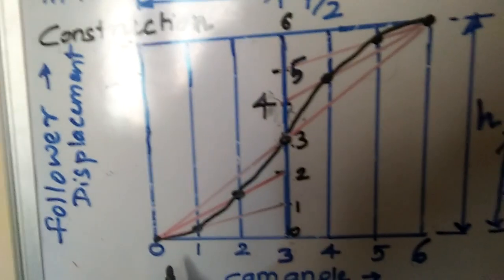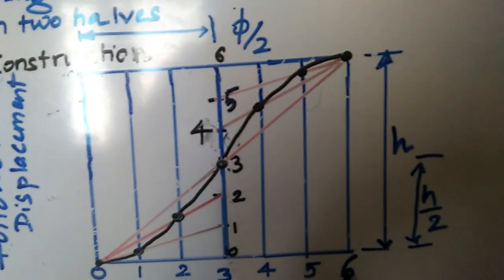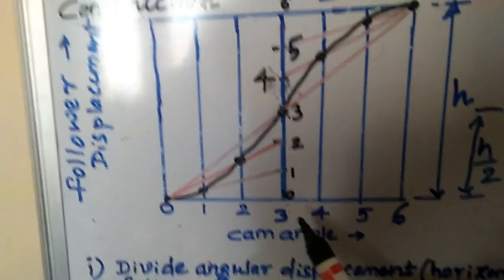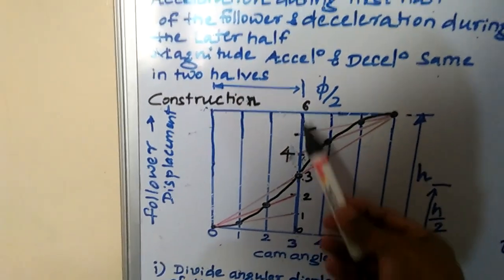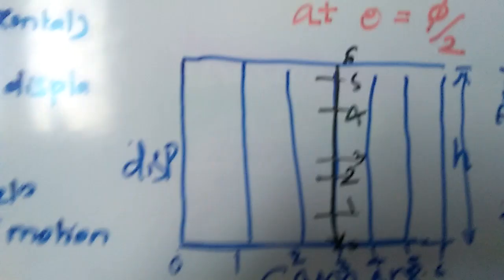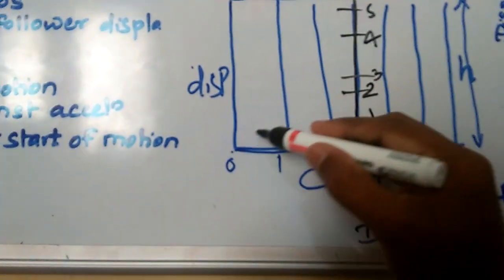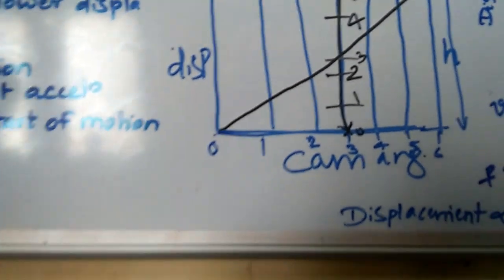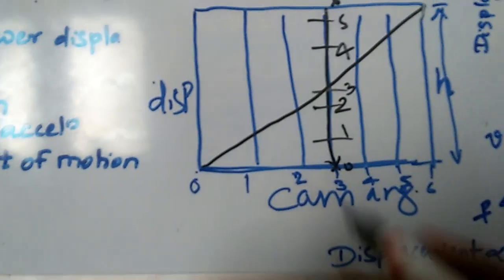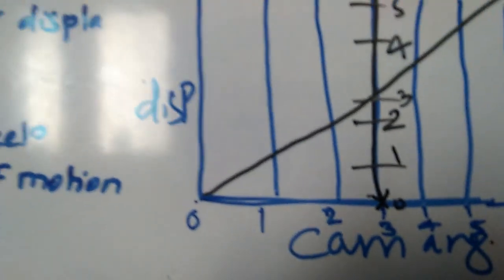Look at this. Horizontally I have made 1, 2, 3, 4, 5, 6 divisions. Vertically also you make 0, 1, 2, 3, 4, 5, 6 divisions. Then draw the diagonal — it should pass through the center only. Draw the diagonal and it must pass through the center.